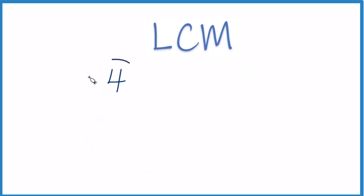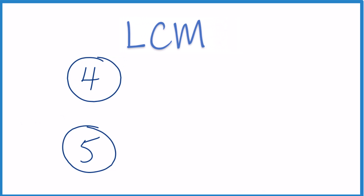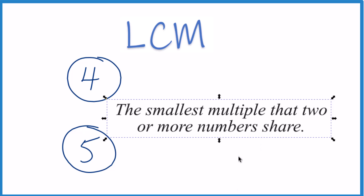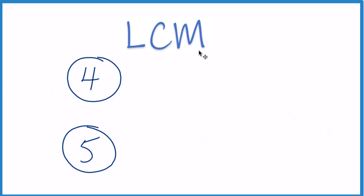Let's find the least common multiple — that's the LCM — and we're looking at 4 and 5. The LCM is the smallest multiple that both numbers share, so that we can divide both of these numbers evenly into. What we can do is list the multiples of 4 and 5, find the ones in common, and then choose the smallest number. I like to start with the bigger number.